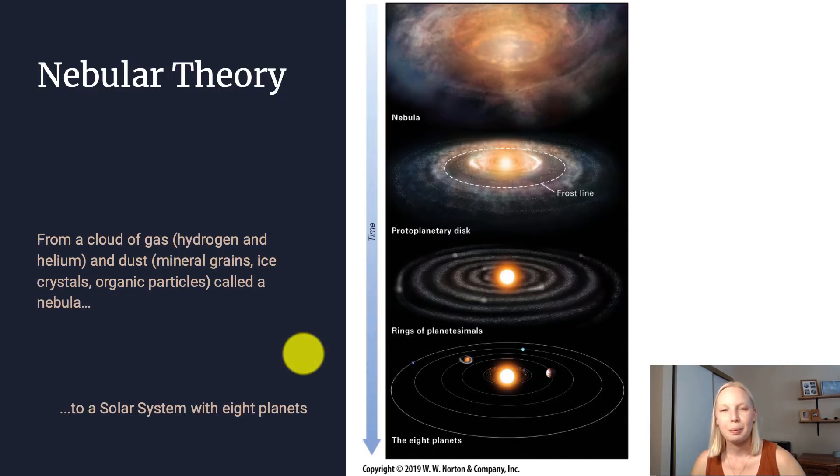Well, the best theory that we have so far is the nebular theory. This is how we went from being a cloud of gas and dust in the sky right after the Big Bang to being a solar system with eight planets surrounding a star. When the nebula was that initial cloud of gas and dust...